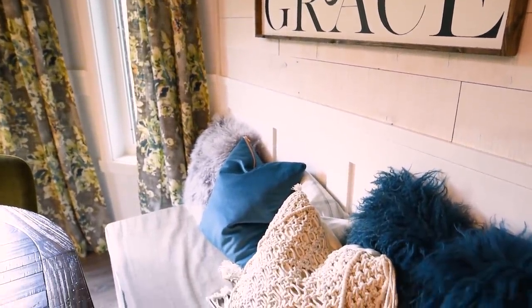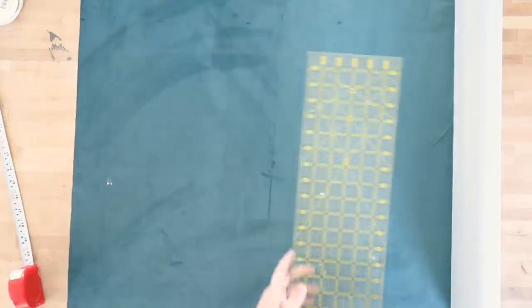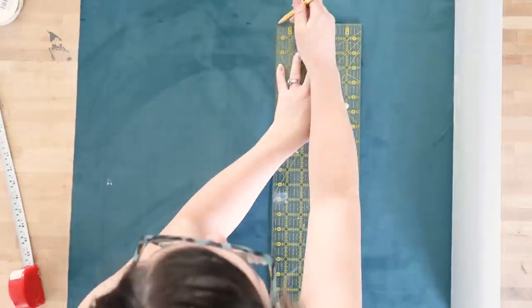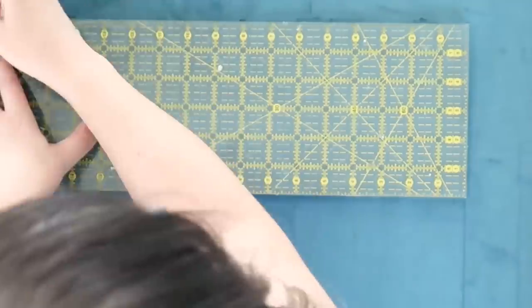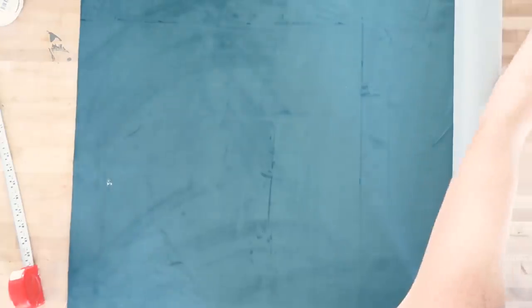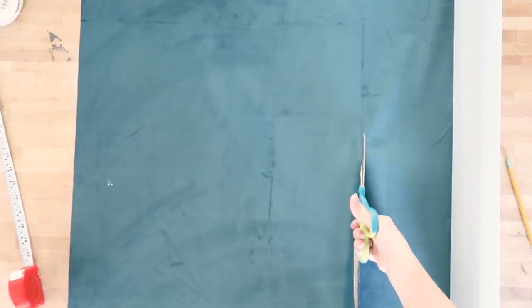First of all, purchase some fabric from fabric.com. I found this fabric in a beautiful deep teal color in a sort of upholstery grade beautiful velvet fabric. I will link to it down below. Next, cut two squares that are the same size as your pillow insert.